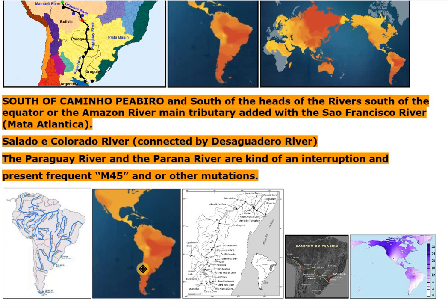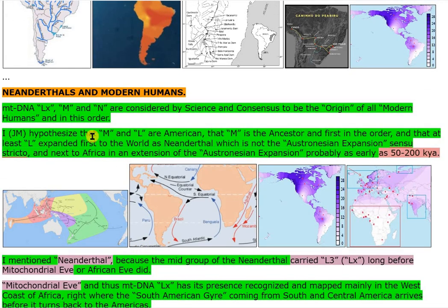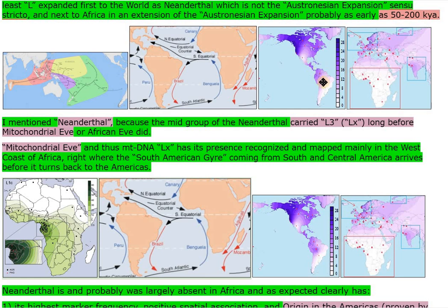Neanderthals and modern humans. MtDNA LX, M and N are considered by science and consensus to be the origin of all modern humans, in this order. I hypothesize that M and L are American, that M is the ancestor and first in the order, and that at least L expanded first to the world as Neanderthal — not the Austronesian expansion stricto sensu — and next to Africa in an extension of the Austronesian expansion, probably as early as 50 to 200 Kya. The mid-group of the Neanderthal carried L3, LX, long before Mitochondrial Eve or African Eve did. Mitochondrial Eve and thus MtDNA LX has its presence recognized and mapped mainly in the west coast of Africa, right where the South American gyre, coming from South and Central America, arrives before it turns back to the Americas.